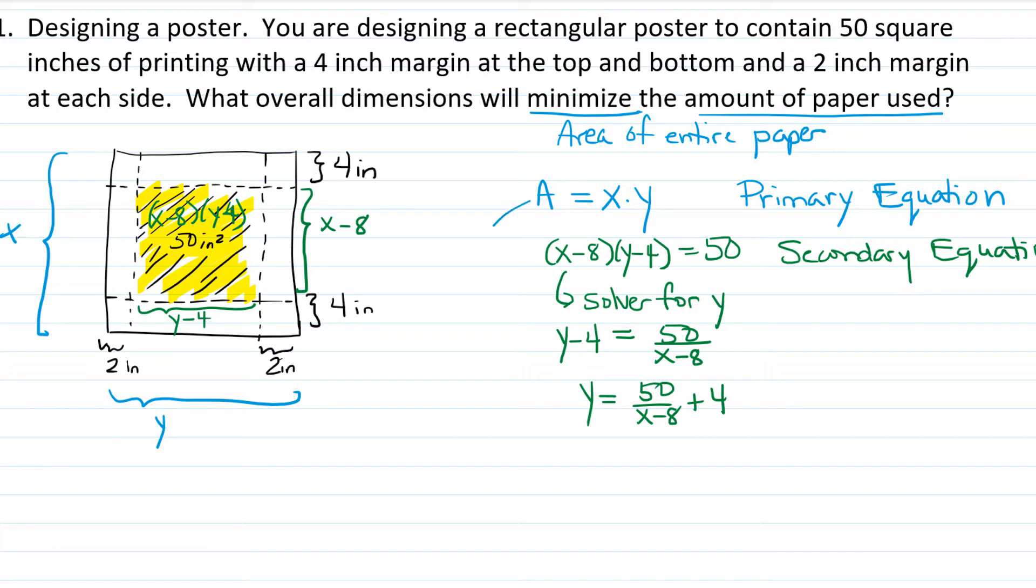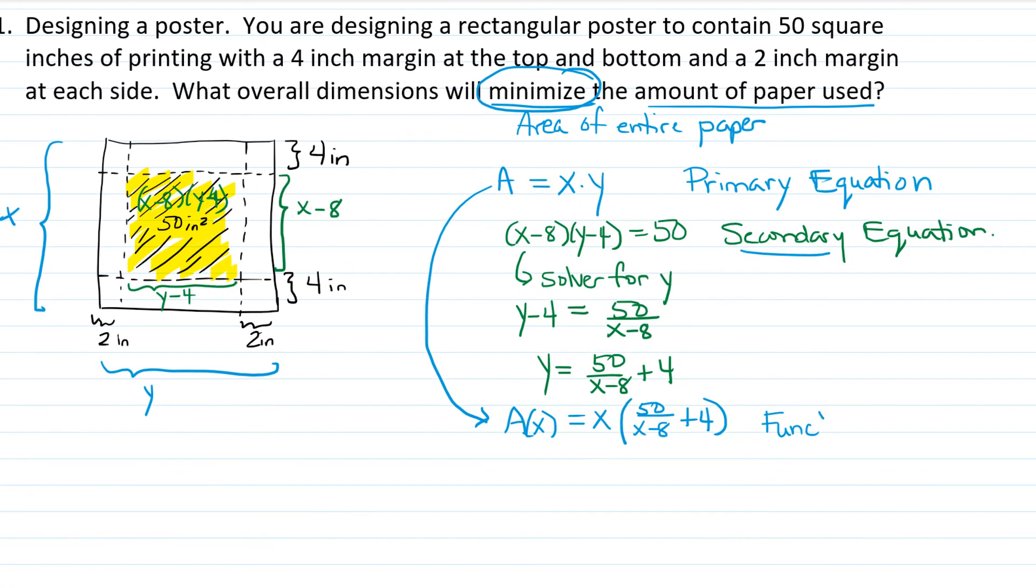The reason that's important is because we can take that and plug it into our primary equation and create A of X, a function that's only written in terms of X's. A of X would be X times Y, but instead of Y, we write what it's equal to: 50 over X minus 8 plus 4. We use the primary equation, which comes from the quantity we're trying to maximize or minimize, along with a secondary equation that gives a relationship between the variables in order to get a function of one variable. This is a very important idea that we're going to use over and over again in these types of problems.